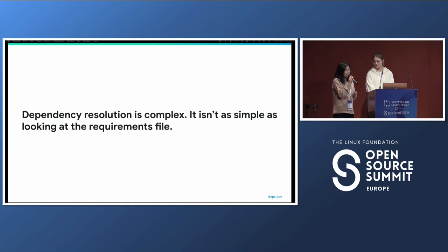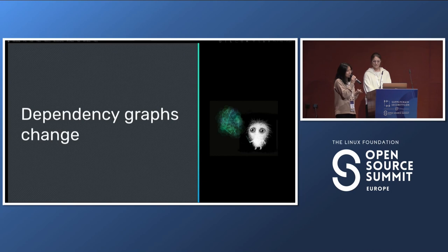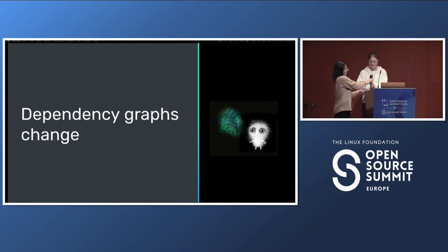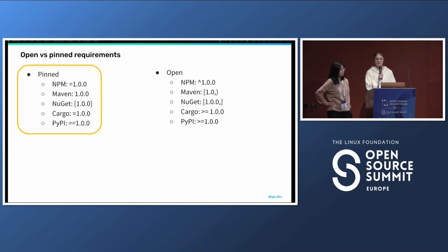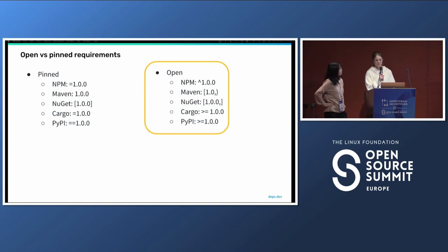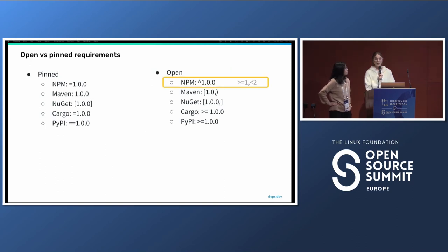Dependency graphs don't just change because of complexity — they change over time due to open requirements. We put requirements into two broad categories: pinned and open. Pinned requirements specify exact versions. Open requirements allow room for change — for all the open examples, there are multiple versions that can satisfy them. With the exception of NPM, these are examples of open requirements meaning accept any version greater than or equal to 1. In NPM, the caret operator is the usual way of specifying open requirements, meaning any version with major version 1 — greater than or equal to 1 but less than 2.